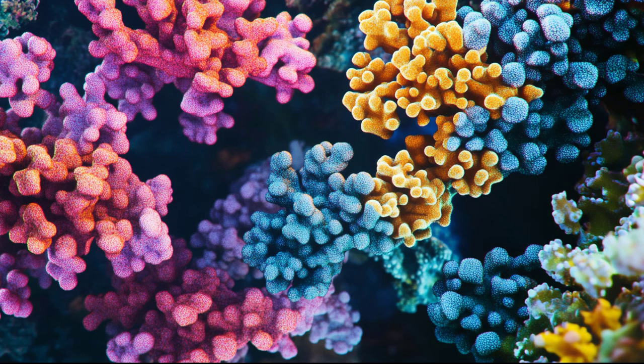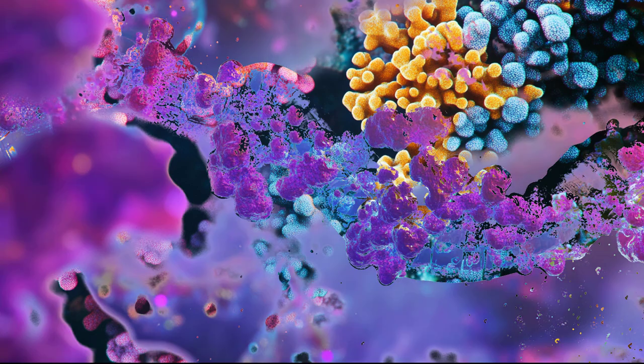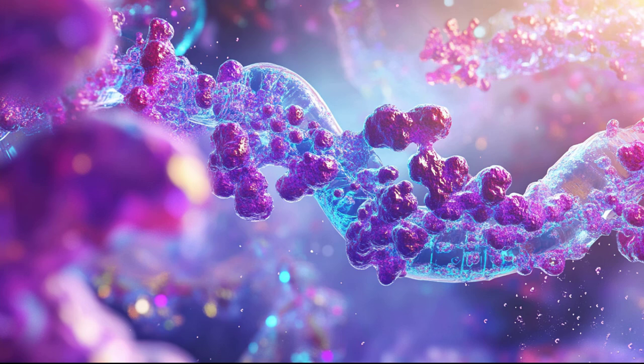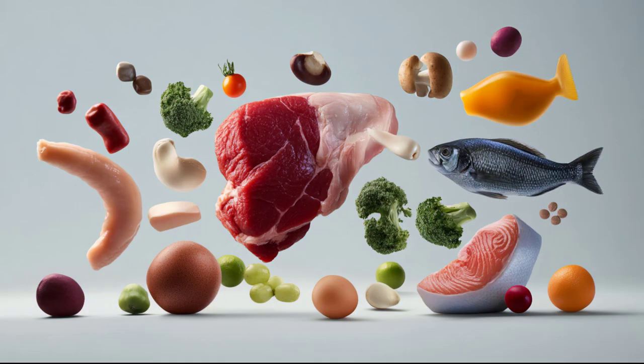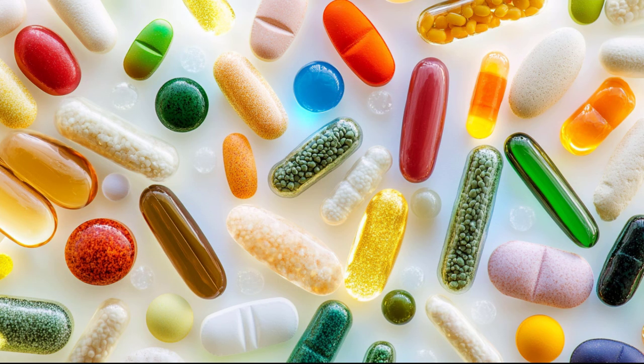Proteins work not just because of their sequence of amino acids, but also because of how they fold into 3D shapes and perform specific functions. Traditional protein design focused mainly on the sequence, but ESM3 considers all three aspects at the same time. Think of it like a chef who not only picks the right ingredients, but also considers cooking techniques and presentation to make the perfect dish. By analyzing all factors together, ESM3 can design proteins that are both stable and useful.